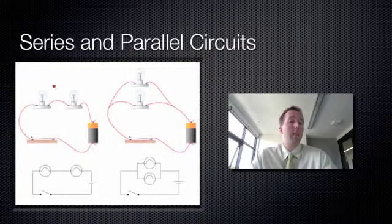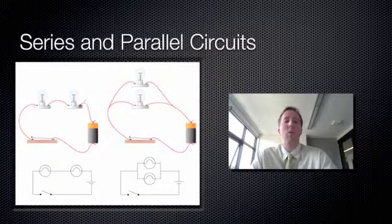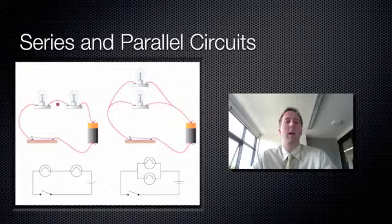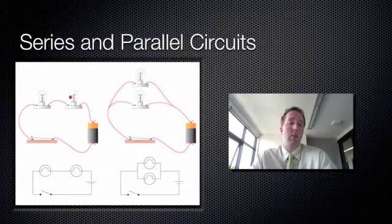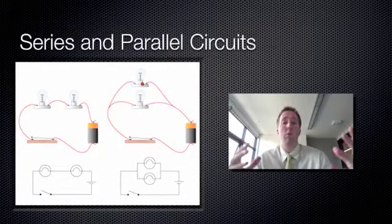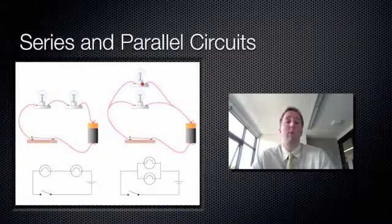If I had 10 light globes in a series circuit, all of the globes would glow at about one-tenth of the brightness as if I had just one globe in a series circuit. So in a series circuit the globes will glow less bright, and in parallel they'll all glow as bright as they can.